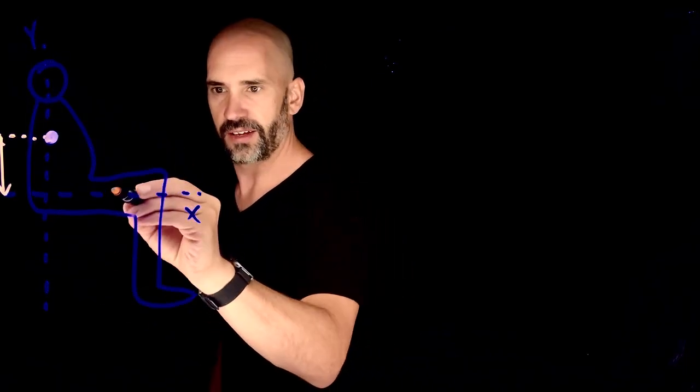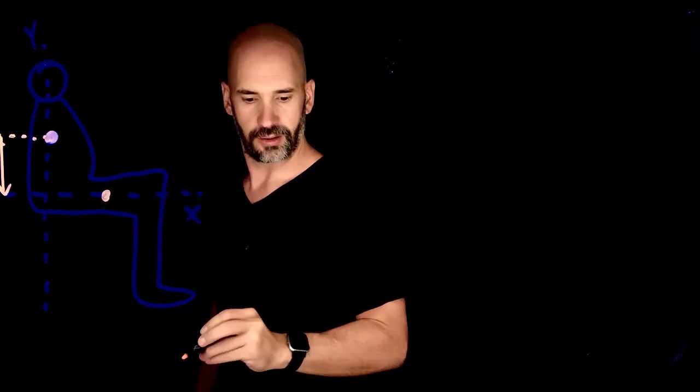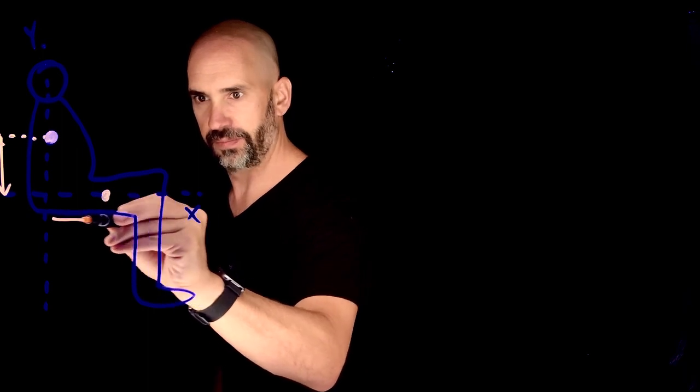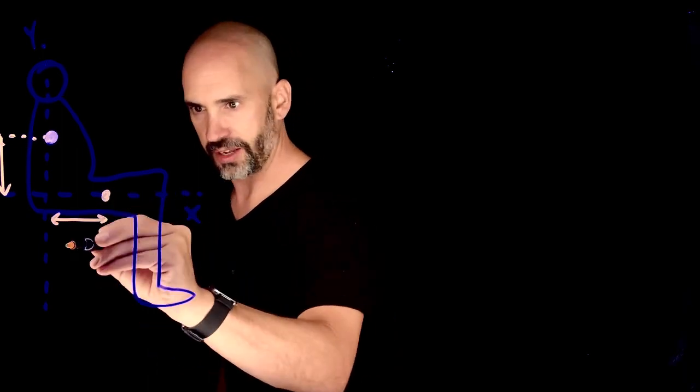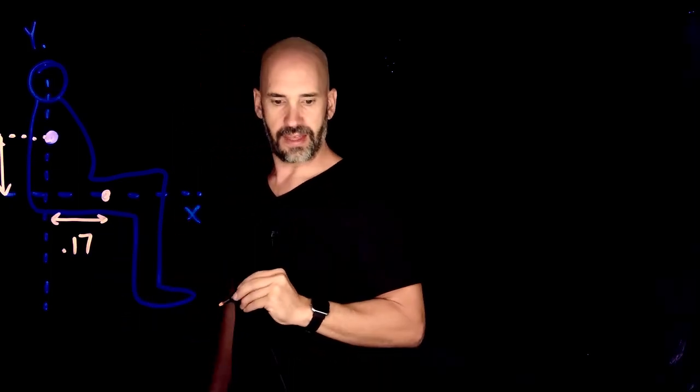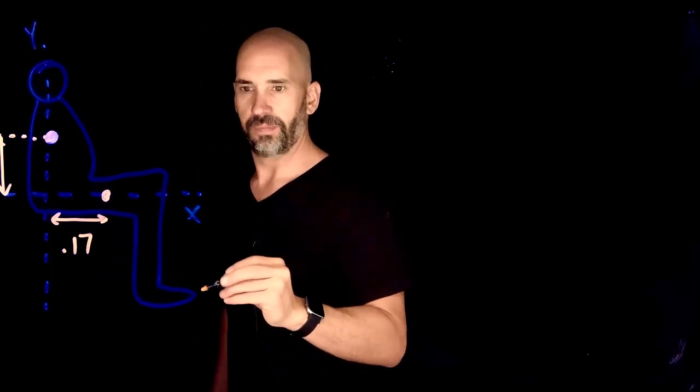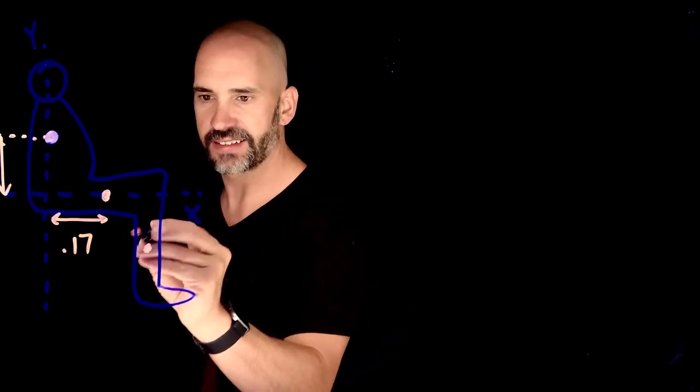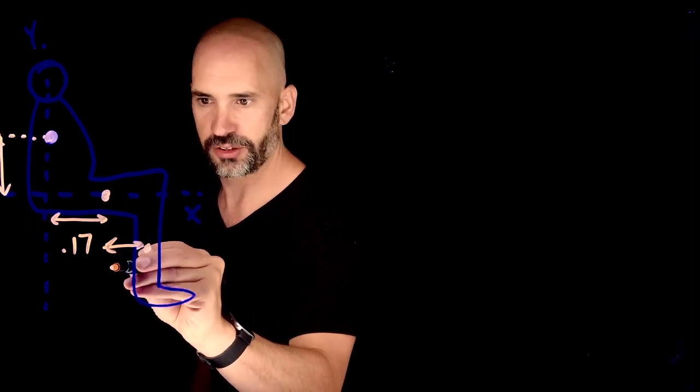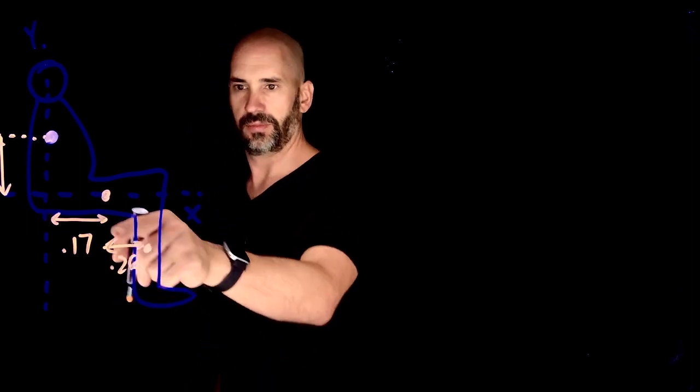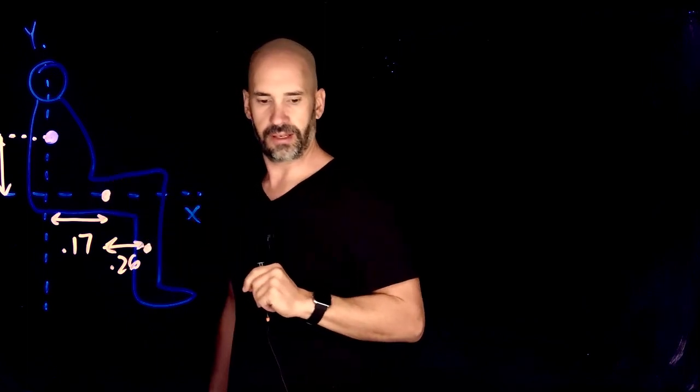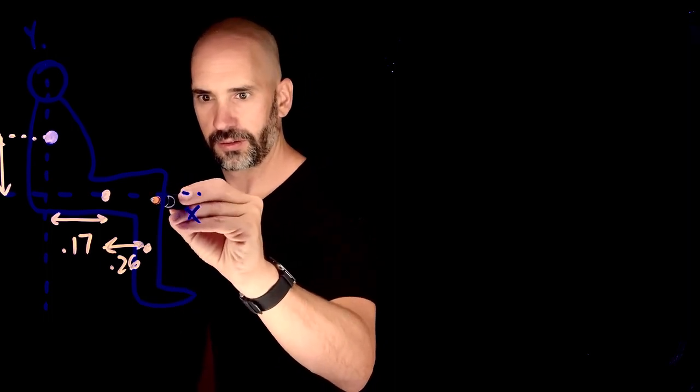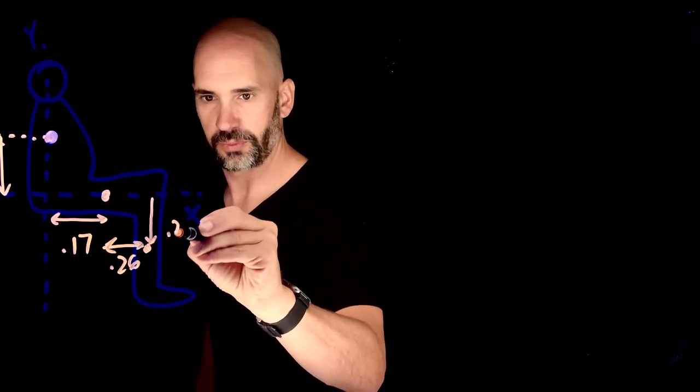Then we also have the center of mass of the upper leg, and we are saying that this distance here to that is 0.17. And then we have the calf or the lower leg over here. And we're saying that this is an additional 0.26 meters from the center of mass of the upper leg. And this is also going down 0.26 meters.